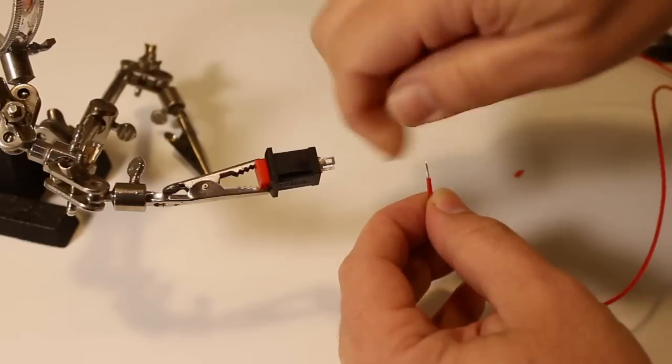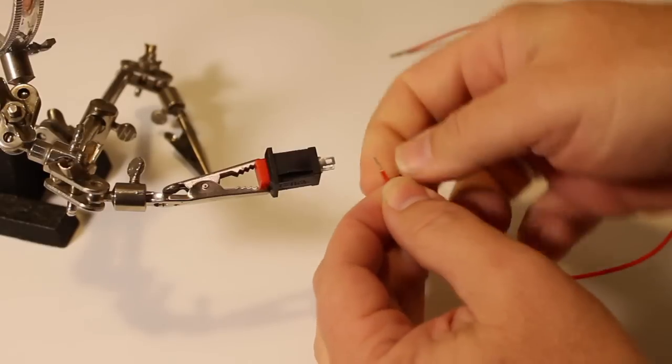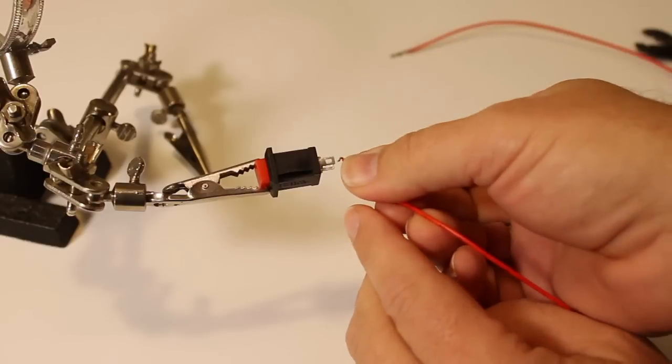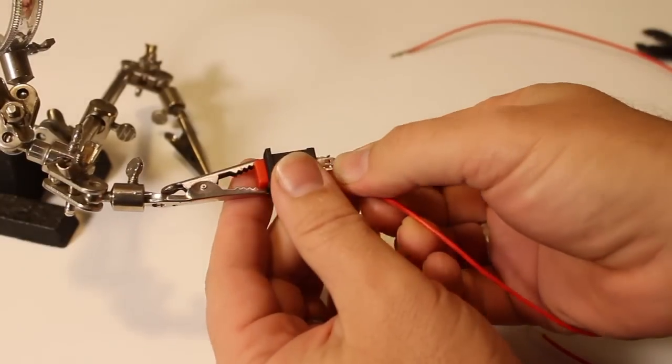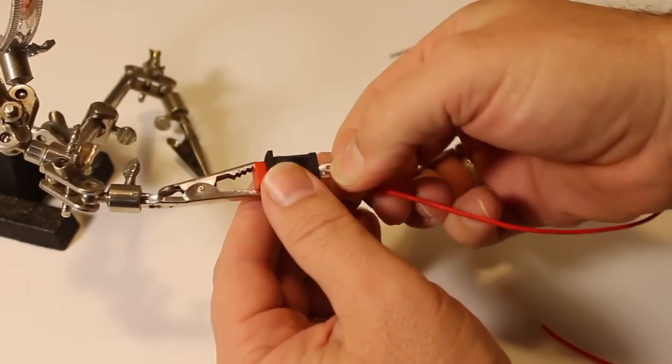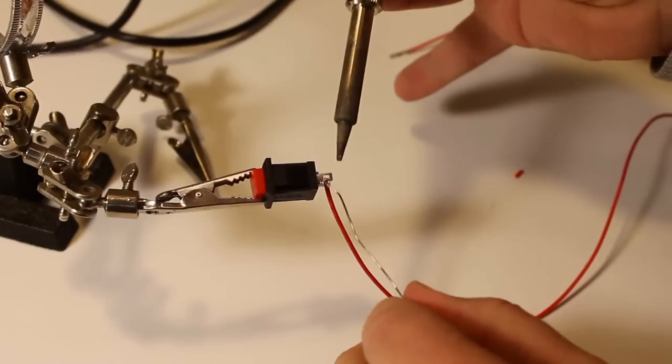Just the strands, just so that the end of it is nice and stiff. Give a little bit of a bend and just put it through the holes on the terminal of the button. And then give it just a little dab of solder to keep it in place.